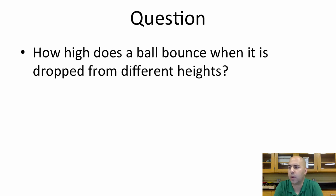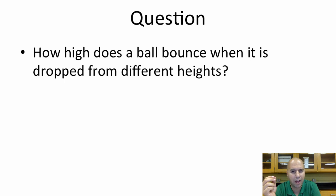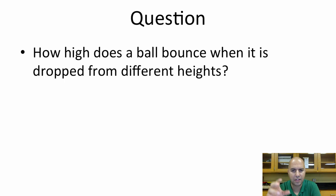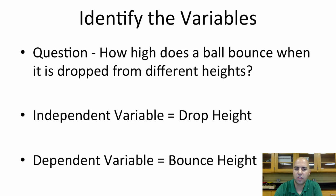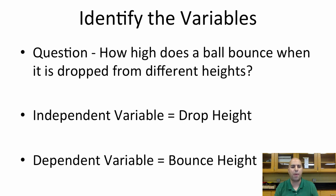So let's use a question that we've talked about in class to show how to set up the data tables and graphs. If I use the question, "How high does a ball bounce when it's dropped from different heights?" — that's something we can measure, something we can test. So the first thing we need to do is identify those variables. I look at the question and think, what are the two things that I'm measuring here?